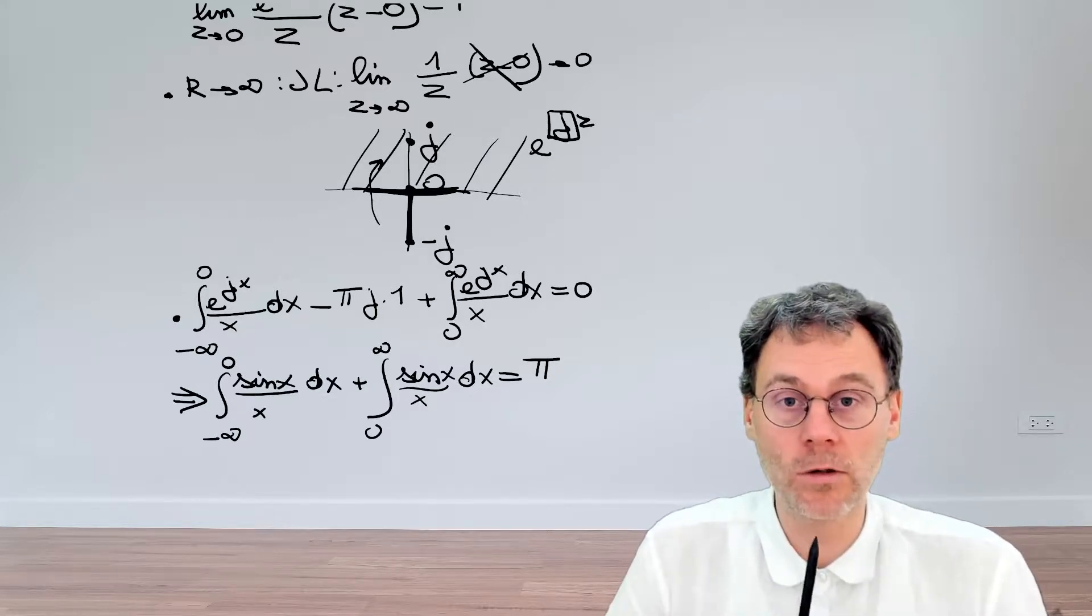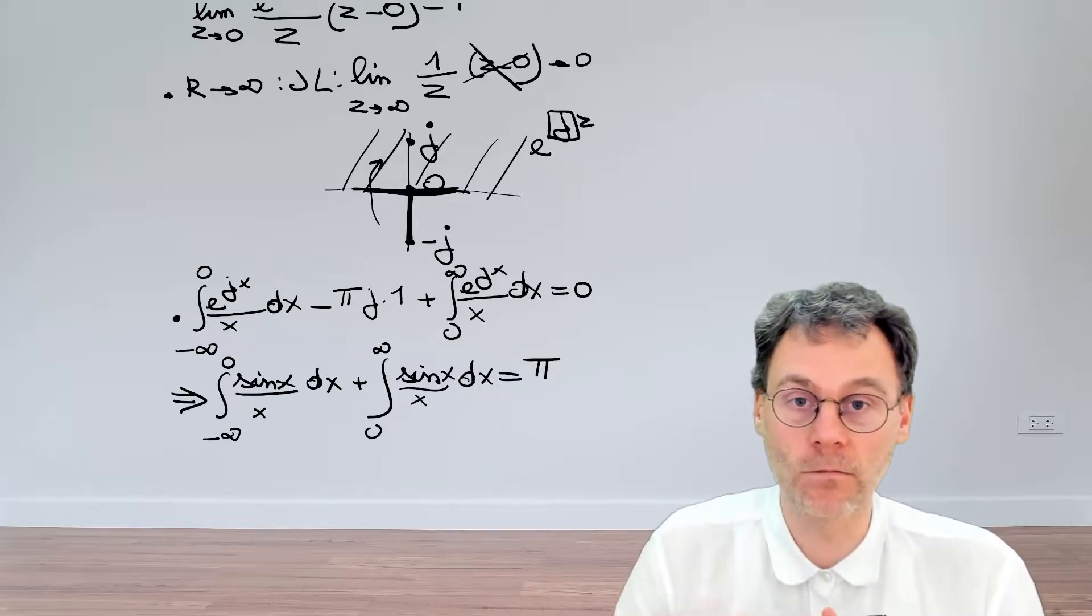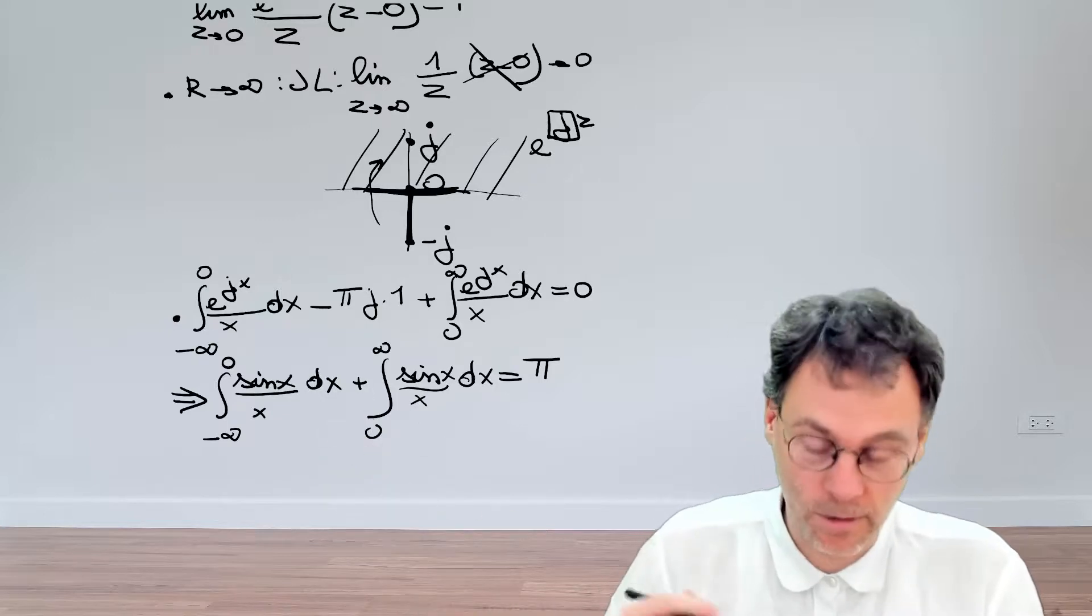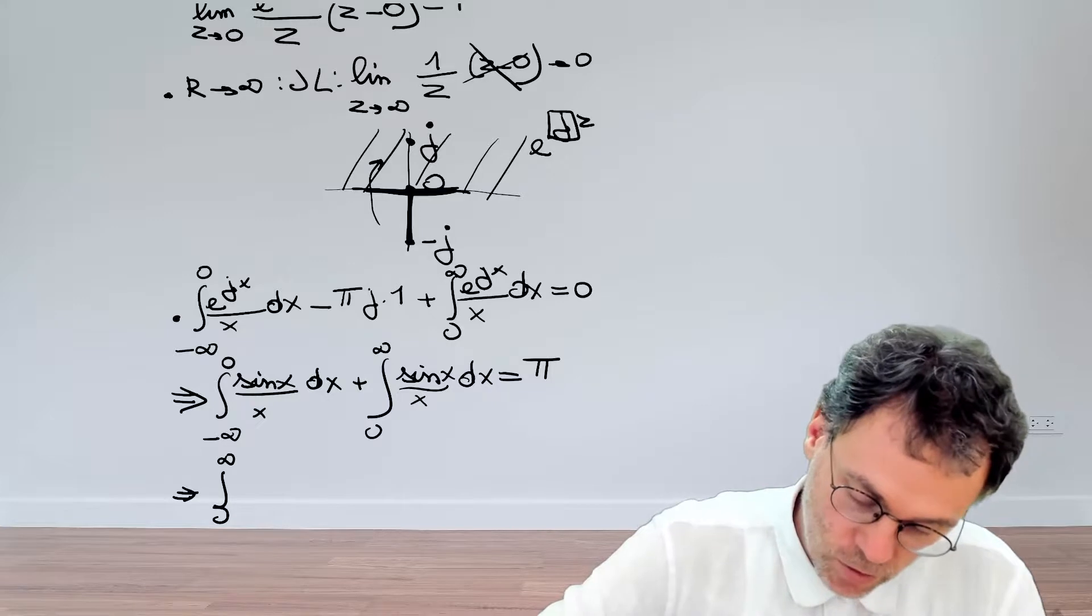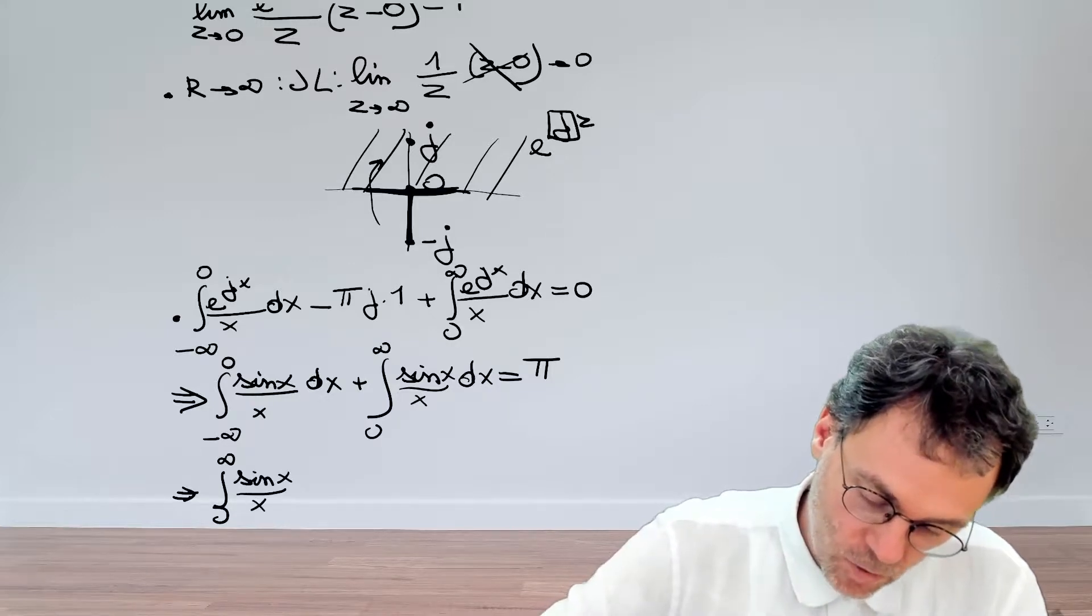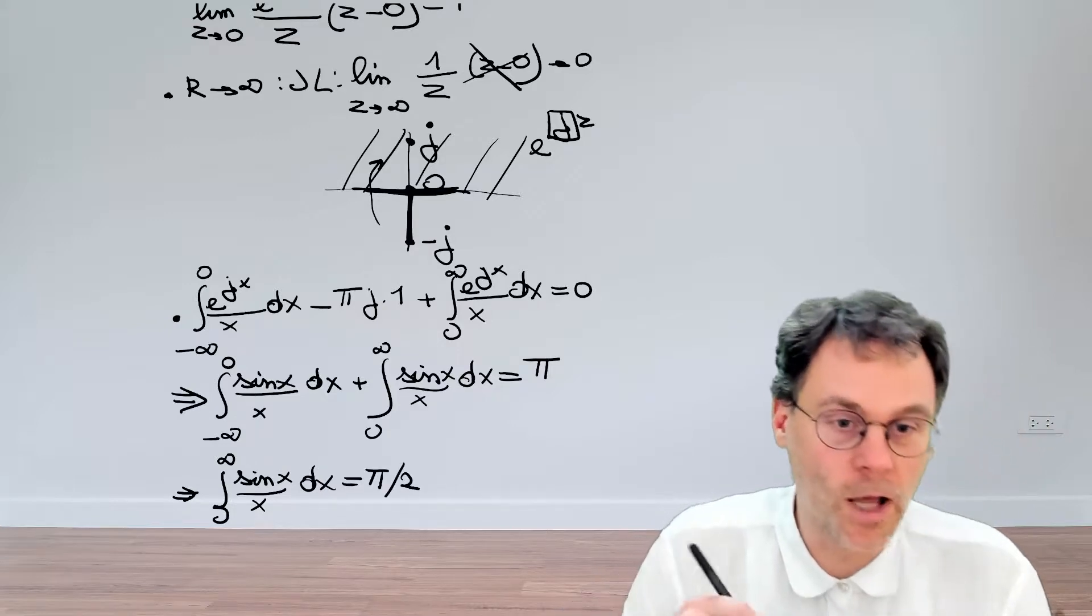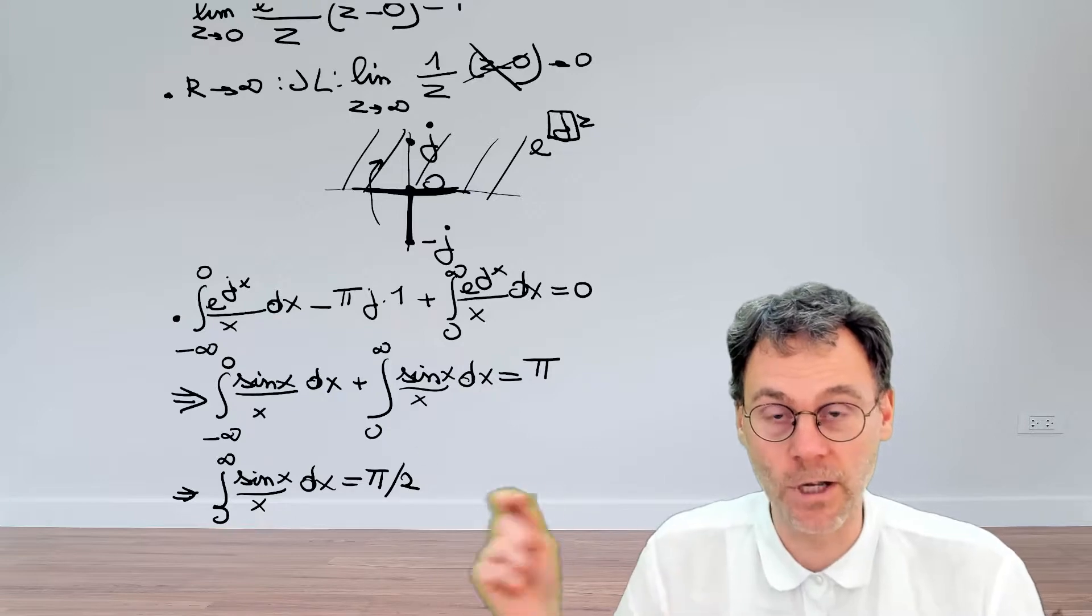The only thing we need to realize is that the integral over here is an even function. But therefore, these two guys are just the same. And that means that we can just say that the integral from 0 to infinity of sine X over X DX at long last is equal to pi over 2. Okay, good news. So we've solved the integral.